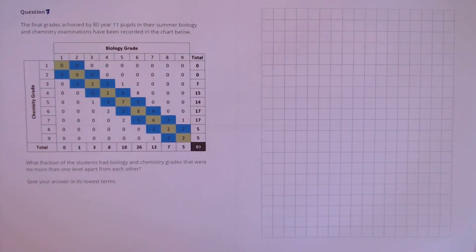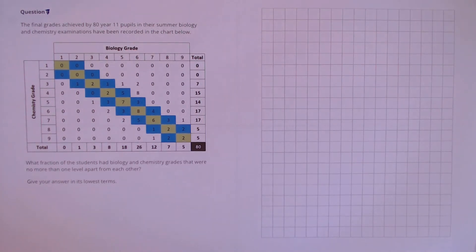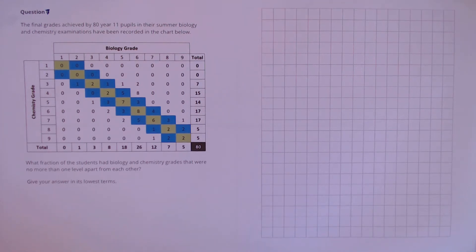Question 7. The final grades achieved by 80 year 11 pupils in their summer biology and chemistry examinations have been recorded in the chart below. What fraction of the students had biology and chemistry grades that were no more than one level apart from each other? Give your answer in its lowest terms.